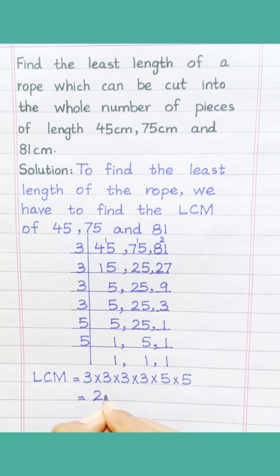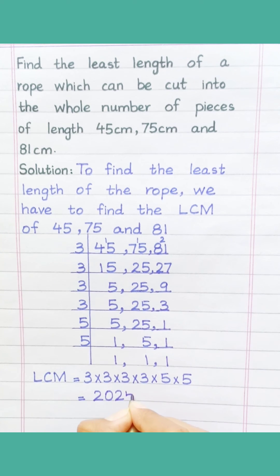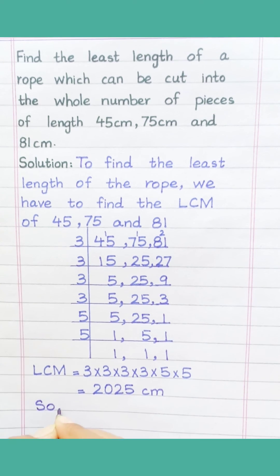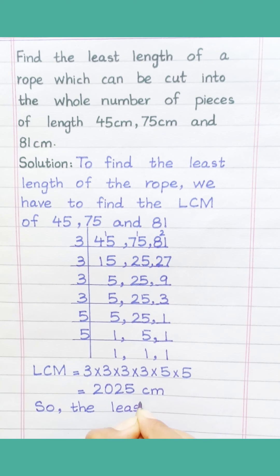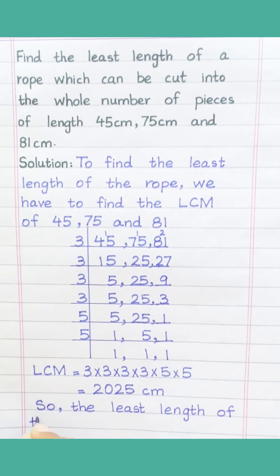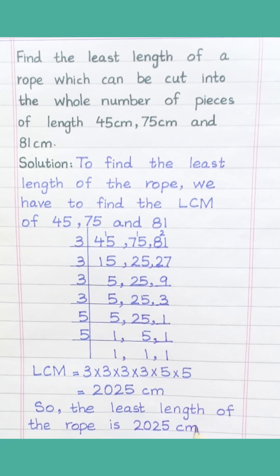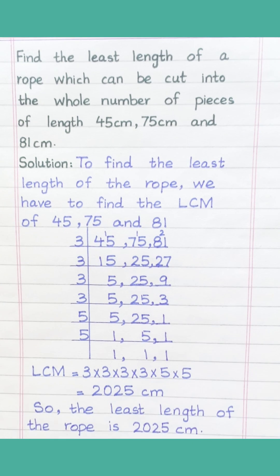Two thousand and twenty-five centimeters. So the least length of the rope is two thousand and twenty-five centimeters.